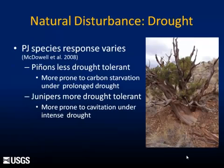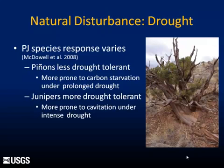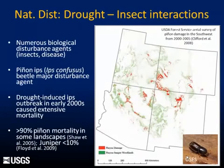Climate itself can be a form of natural disturbance. Drought conditions are very important in PJ systems, though the response can vary not only by ecosystem type but between the species themselves. McDowell et al. does a nice job of laying out the differences between pinions and junipers in their response to drought. In a nutshell, pinions are generally less tolerant and may be more prone to carbon starvation, especially under prolonged drought, while junipers are generally more drought tolerant but can be prone to hydraulic failures under periods of intense drought.